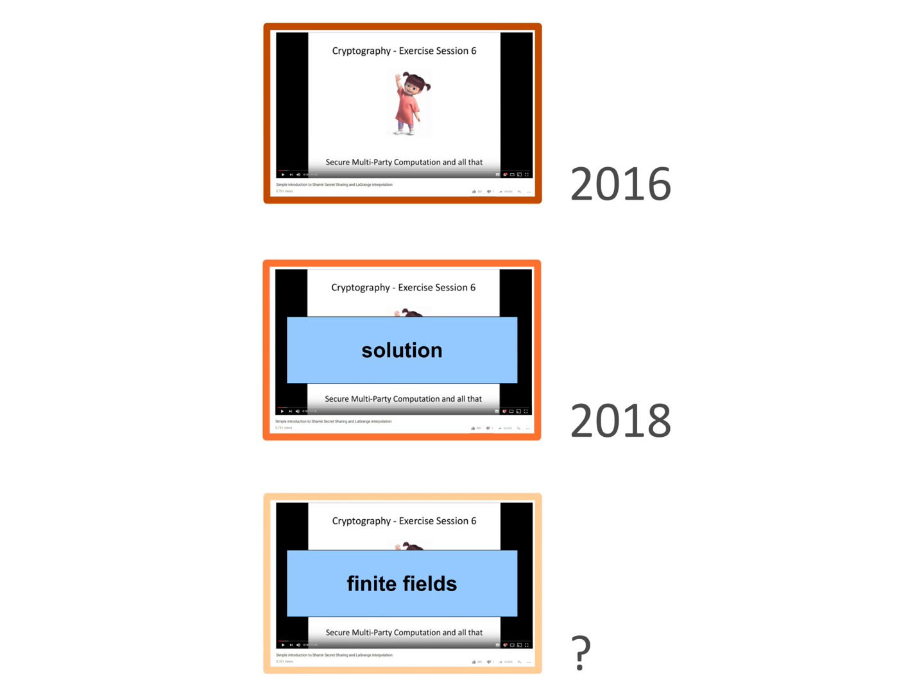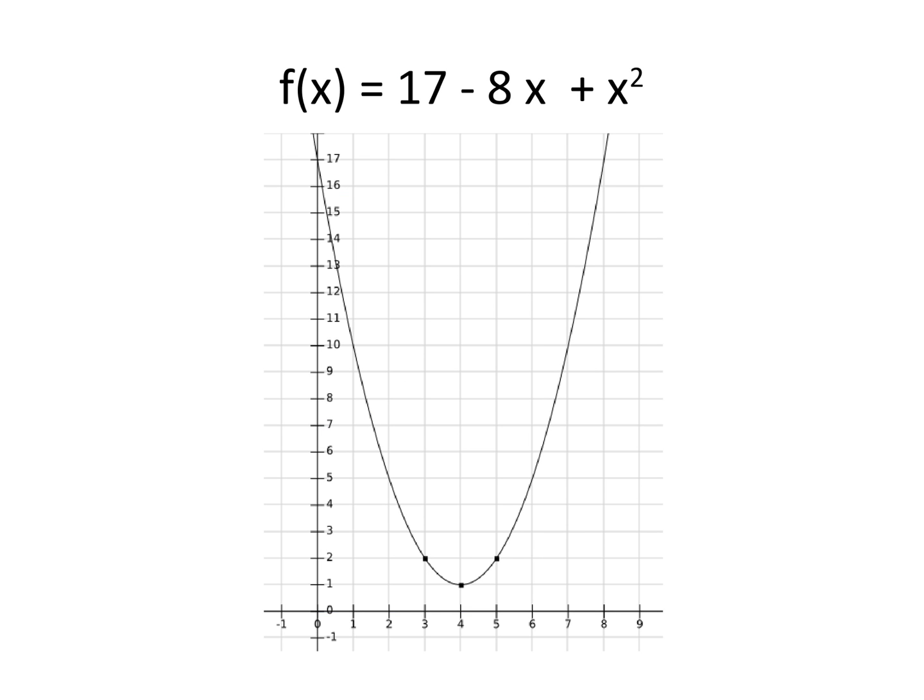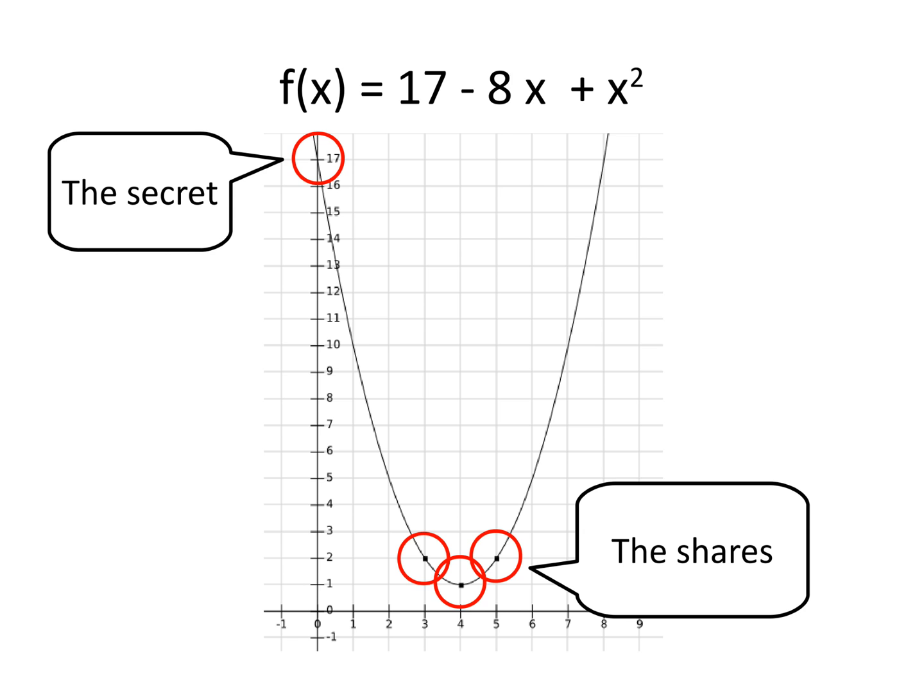So if instead you apply Lagrange interpolation without taking the finite fields into account, you should have found the solution that f is equal to 17 minus 8 times x plus x squared. Here the secret value is 17. And again we can verify that the polynomial indeed hits all the shared points.